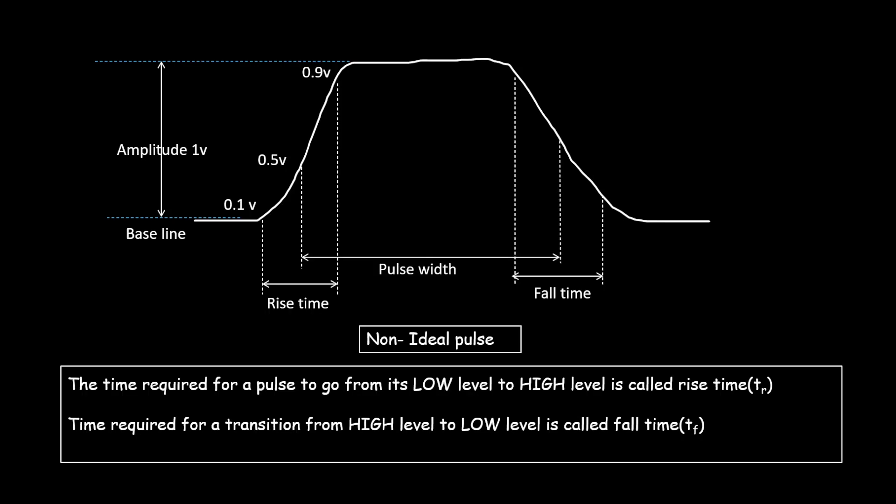The pulse width is a measure of the duration of the pulse and is often defined as the time between 50% of the points on the rising and falling edges.